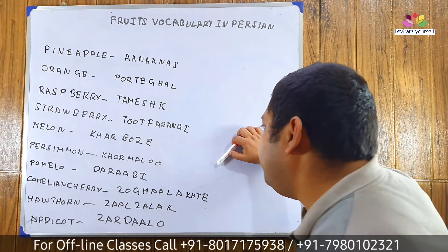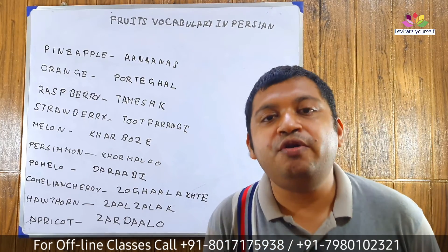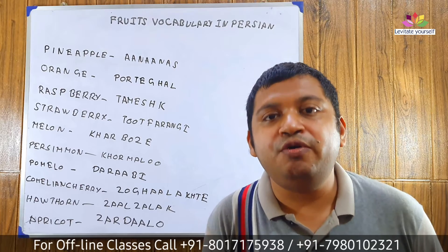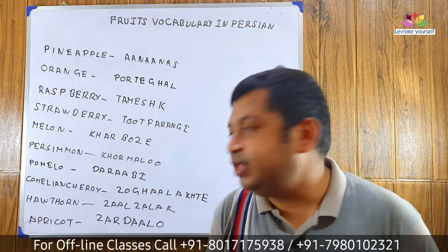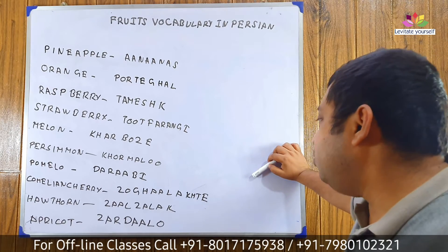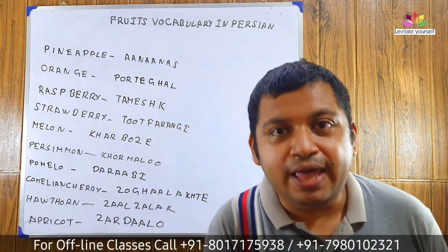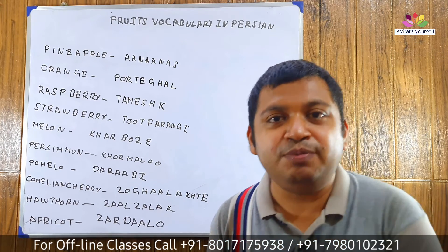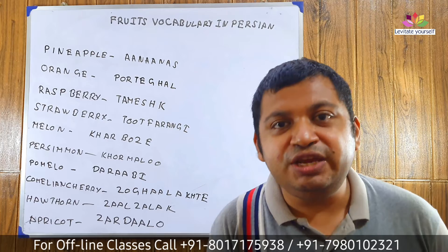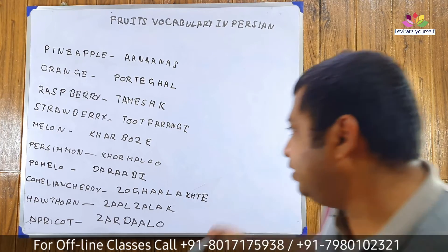Pomelo: Dorobi. Let's pronounce it with me: Dorobi. Come to the next word. Cornelian cherry: Zoghal Akhte. Let's pronounce it with me: Zoghal Akhte.